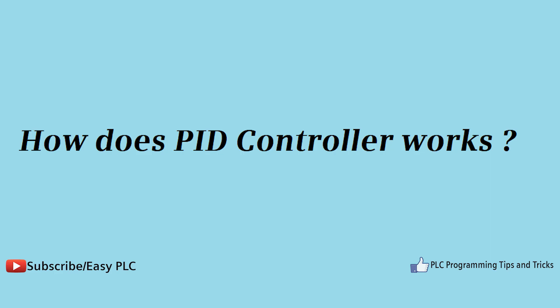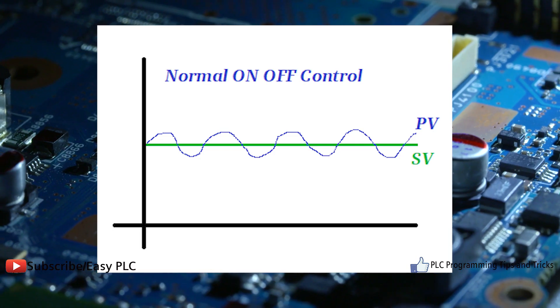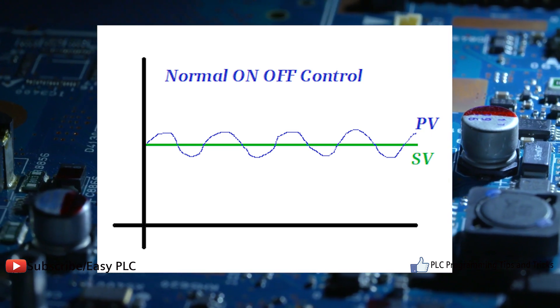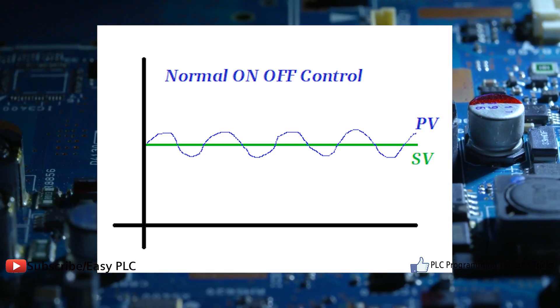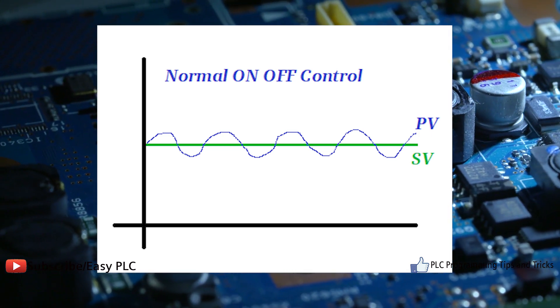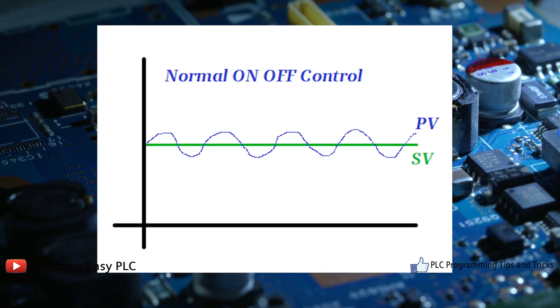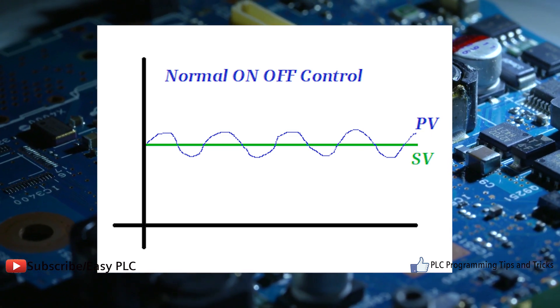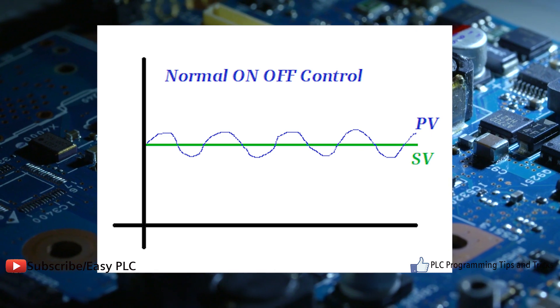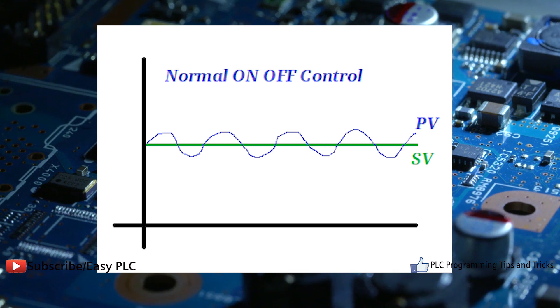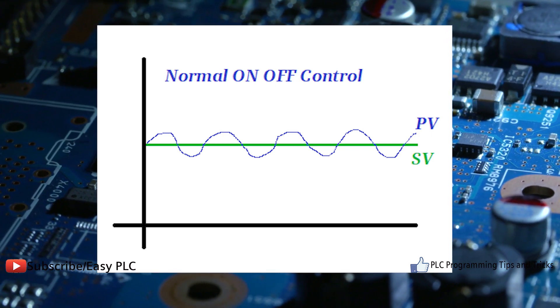Working of PID controller: With the use of low-cost simple on-off controller, only two control states are possible, like fully on or fully off. It is used for limited control applications where these two control states are enough for process control. However, the oscillating nature of this control limits its usage and hence it is being replaced by PID controllers.